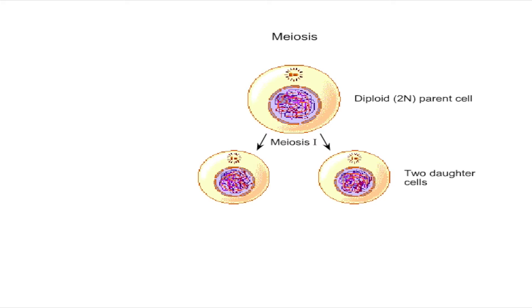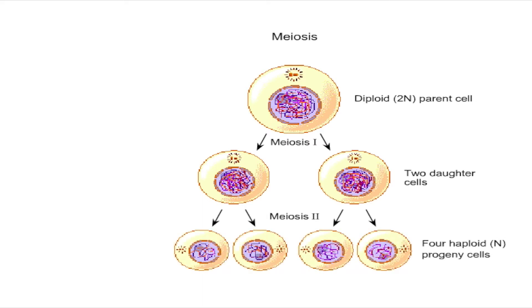During meiosis two, the second round of cell division, the sister chromatids separate. In most cases, both meiosis one and two are accompanied by cytokinesis, so that the end result of meiosis of a single diploid cell is the production of four haploid cells.